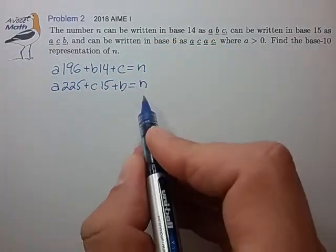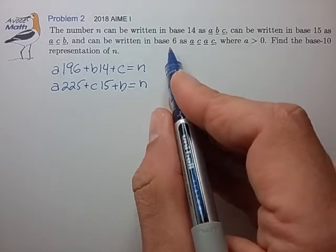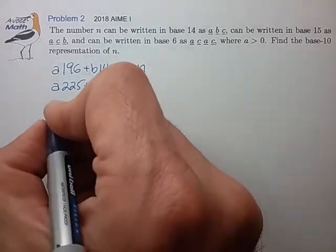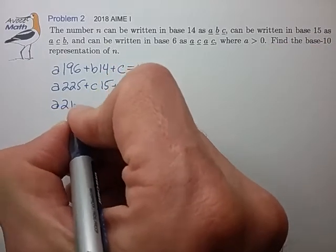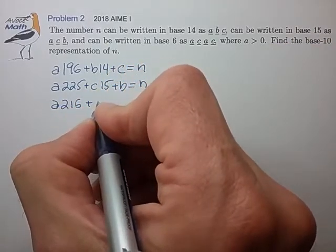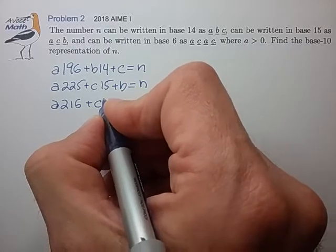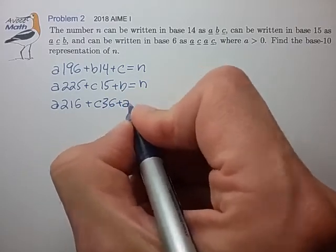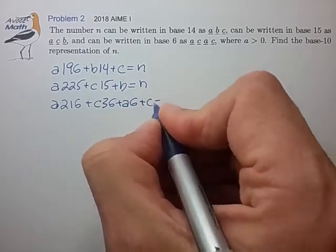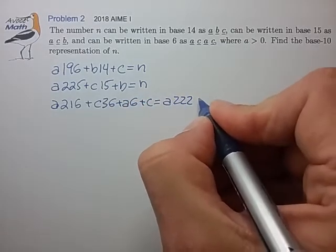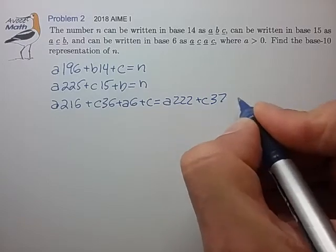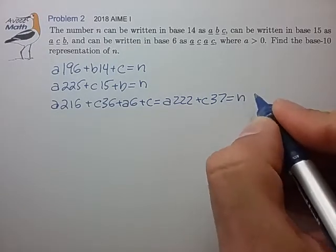And for the third case, we have a times 6 cubed plus c times 6 squared plus a times 6 plus c. Let's reduce this a bit. So that's the third way to express n.